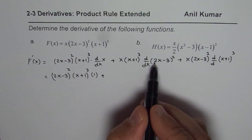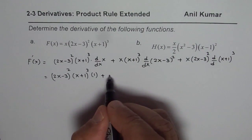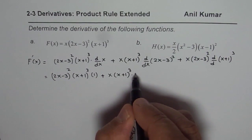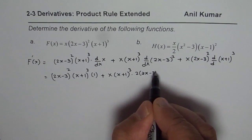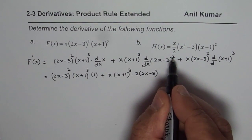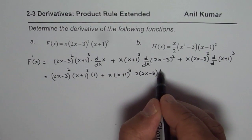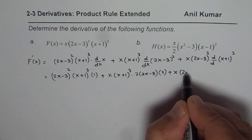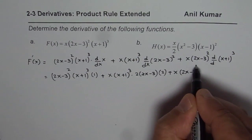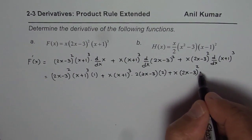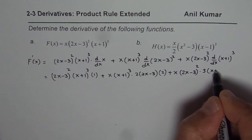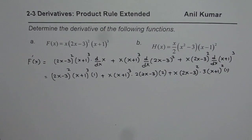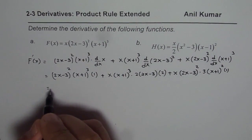Here the derivative is 2, so I write x times (x plus 1) cubed. The derivative of (2x minus 3) squared is 2 times (2x minus 3) to the power 1 times the derivative of the inside function, which is 2. Plus x times (2x minus 3) squared times the derivative of (x plus 1) cubed, which is 3 times (x plus 1) squared times 1. So that is the expression.